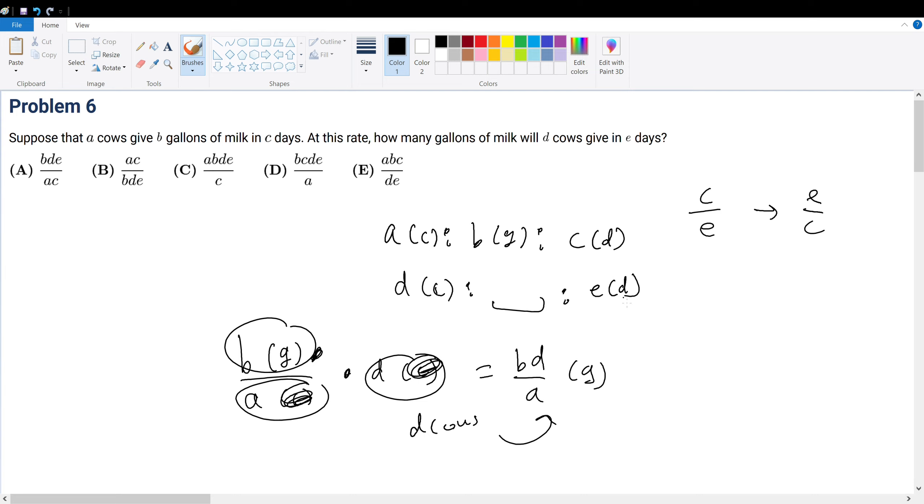Because if we multiply this by E over C, E stands for the number of days that the new cows produce, C is the number of days that the old cows produce. So that means the ultimate unit after the C days and days cancel will give you the number of gallons that the new cows would make with the correct units.